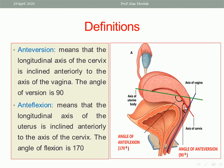What about anteflexion? Please look at the longitudinal axis of the body of the uterus — the green one — and that of the cervix. Anteflexion means that the longitudinal axis of the uterus is inclined anteriorly to the axis of the cervix, and this angle of flexion is about 170 degrees. So this angle is the angle of anteversion between the cervix and vagina, and the other angle between the body and cervix is the angle of flexion. The uterus is anteverted and anteflexed — meaning the body is tilted forward.